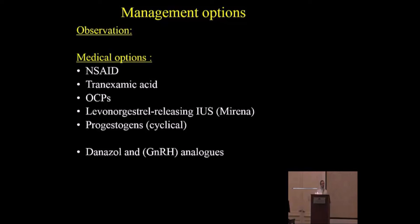Progestins can be used continuously or cyclically with or without estrogen, and the response is acceptable. Cyclical progestins are typically given for 4 to 6 months as a trial, then the patient is reassessed. Patients can be reassured that symptoms will hopefully resolve at menopause. GnRH agonists or antagonists are considered overtreatment for dysfunctional bleeding given their side effect profile; levonorgestrel or progestins are preferred.